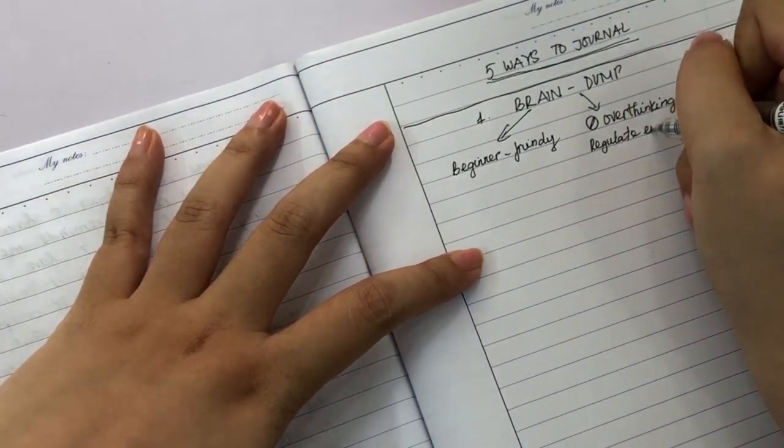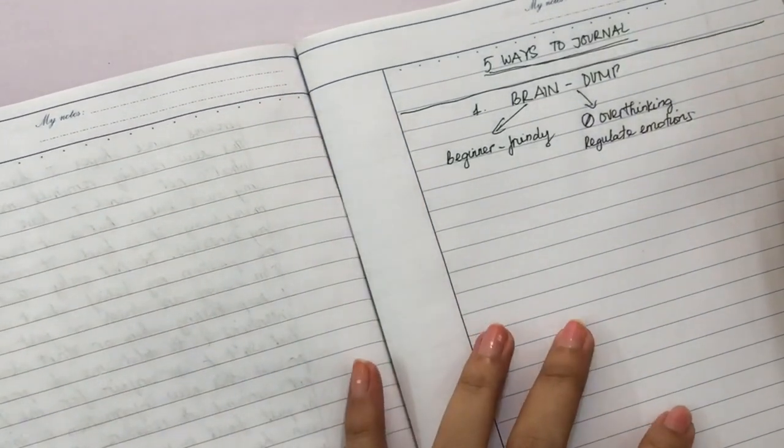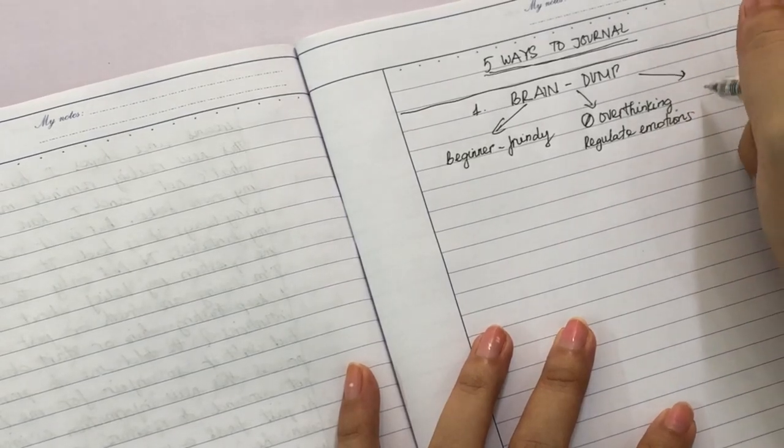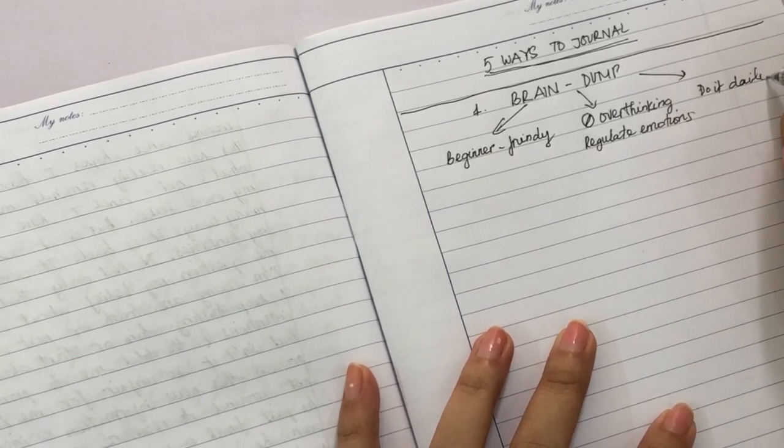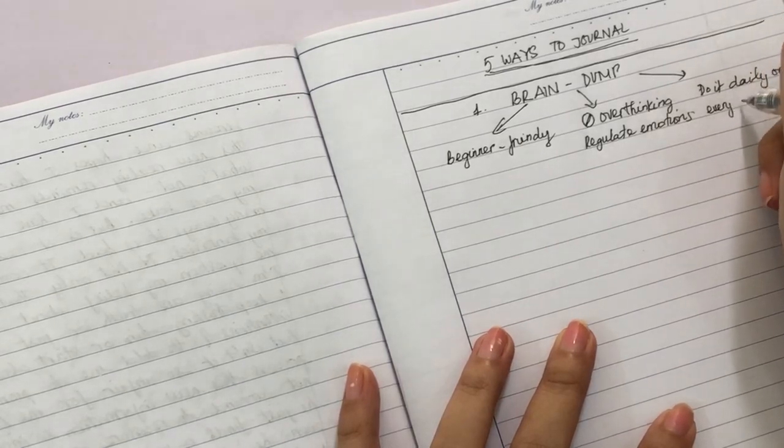If you're feeling like me, that you're feeling very imbalanced with your emotions, you don't know what to do with all these thoughts you have in your head, then please try this brain dump journal for two weeks.